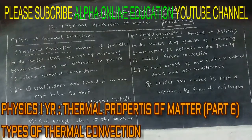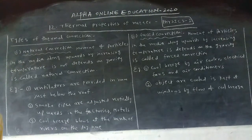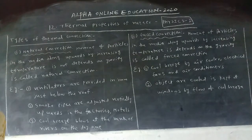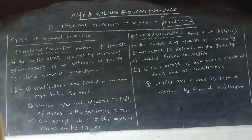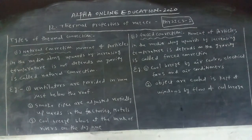We know that thermal convection. What is thermal convection? Heating is transferred from high temperature to low temperature by change of position of the particles in the medium. Particles change their position from high temperature to low temperature. This thermal convection is of two kinds.